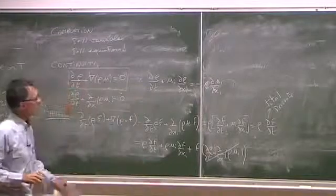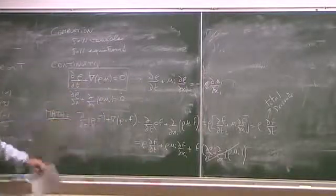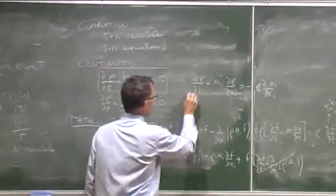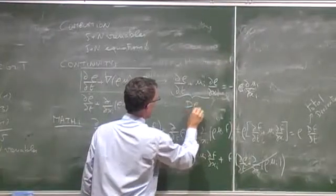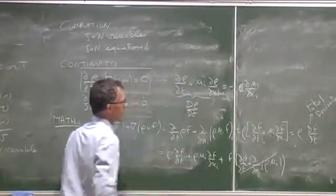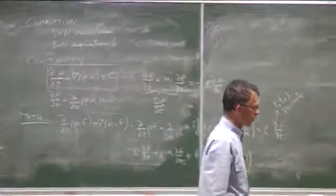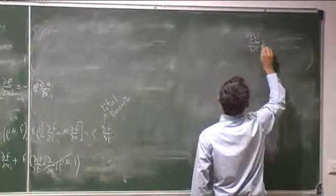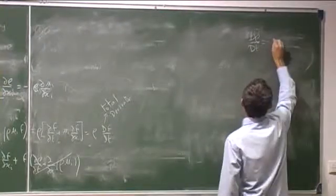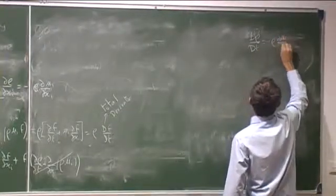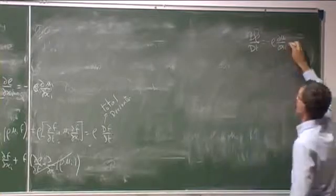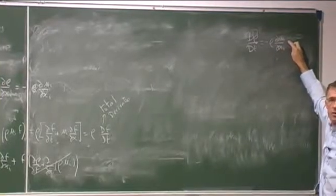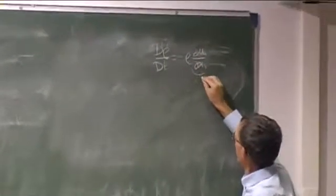It's drho dt plus ui drho dxi equal minus rho dui dxi. It's the same equation, okay? I've just split this term in two, or this term in two. And this term here is drho dt. So I'm going to keep this equation because I'm going to need it somehow later. Put it here.